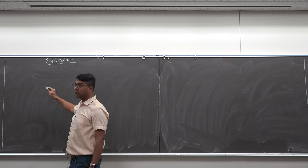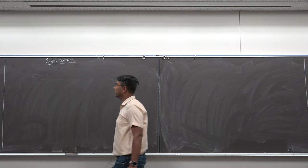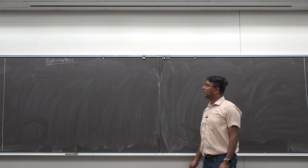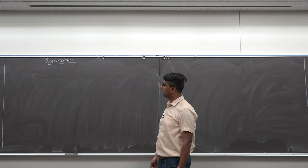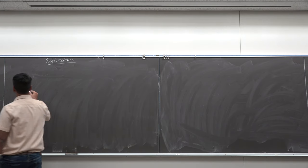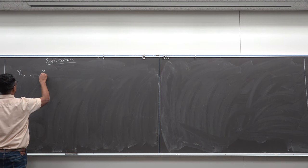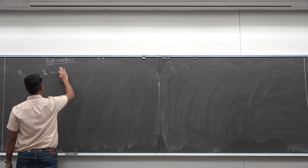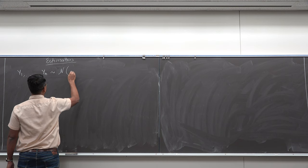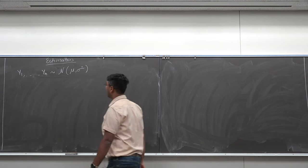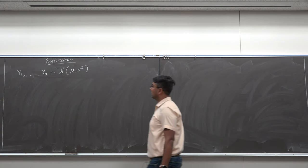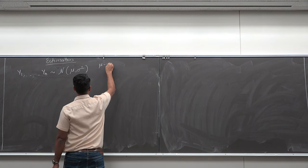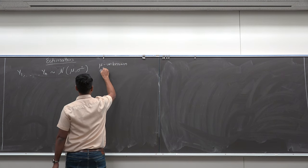In today's class we are looking at the mean and the covariance as things we want to estimate. Next class, Wednesday onwards, we will look at more complicated functions of random variables. Right now, the simple setting is: I am observing y1 to yn — these are Gaussian with mean mu and variance sigma squared. Mu is unknown and sigma squared is unknown.